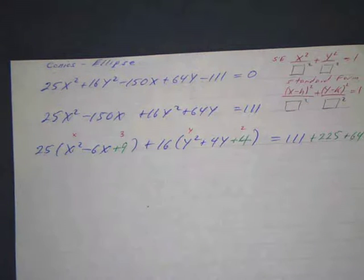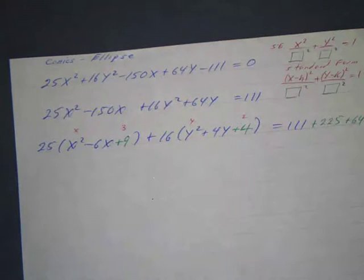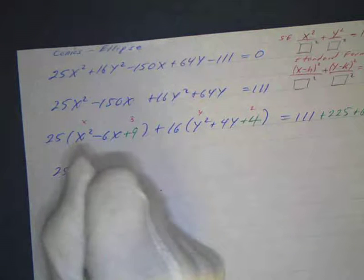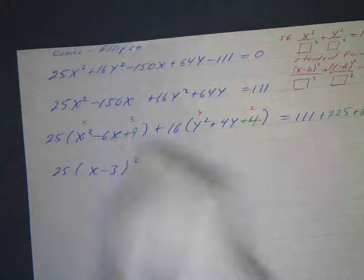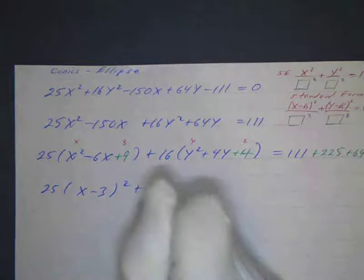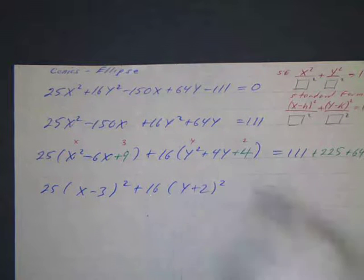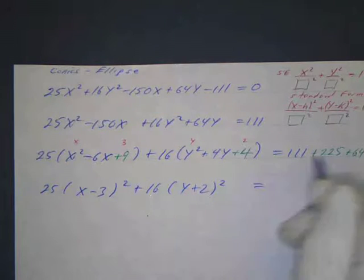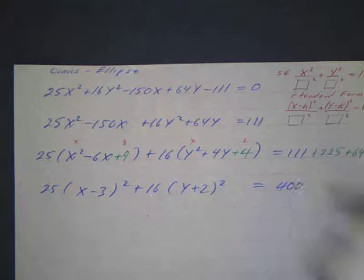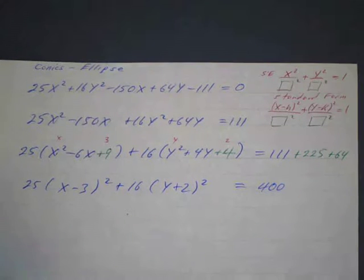And now we can factor these out. This is going to be a trinomial square, so it's going to factor be 25 times x minus 3 squared. Plus 16 times y plus 2 squared. And that equals, if we add all these up, we actually get 400, which is nice. And we want this to be a 1, from our standard form. So we divide everything by 400.